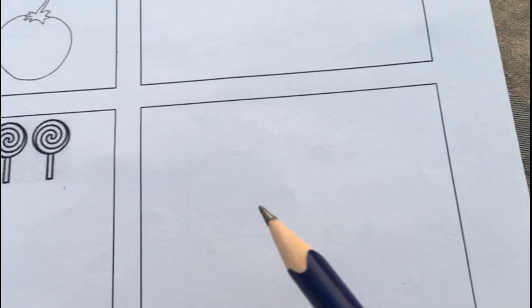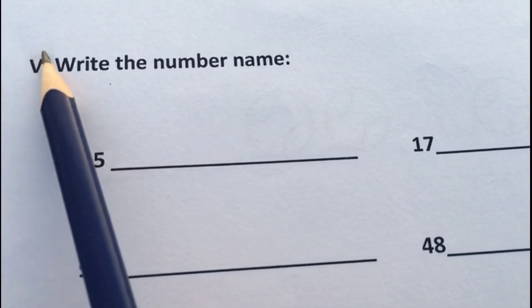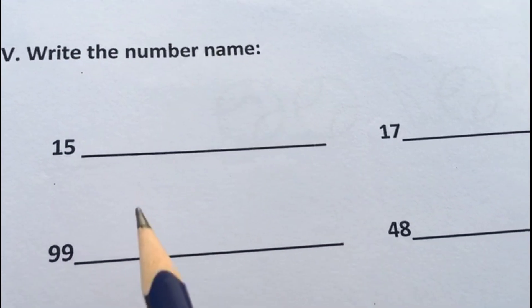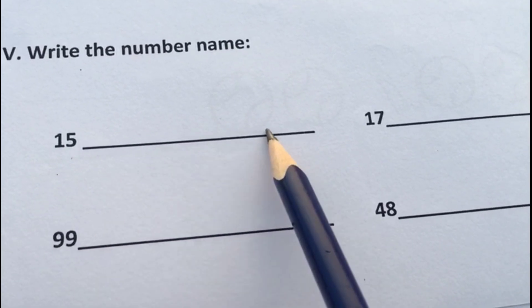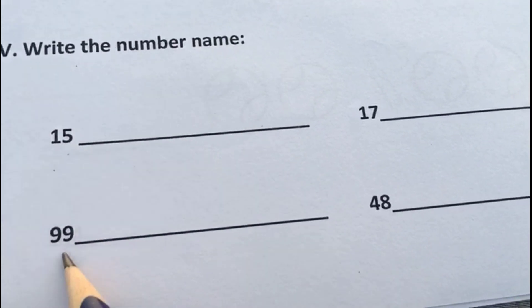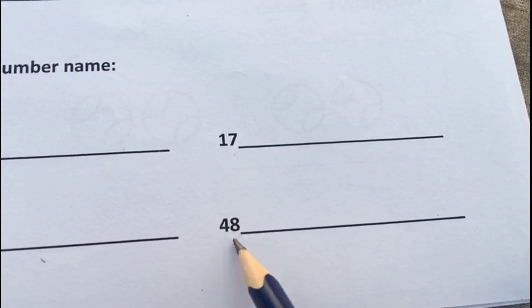This is the fifth question: write the number names. Here we have number 15. Ask your child to write the spelling of 15, spelling of 99 and 17, as well as 48.